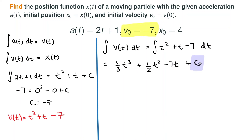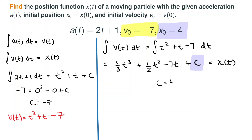We identify the constant of integration through the initial position condition. Plugging t equals 0 into the position equation, all terms go to 0, so the constant C must equal 4. Our position function is x of t equals 1/3 t cubed plus 1/2 t squared minus 7t plus 4.